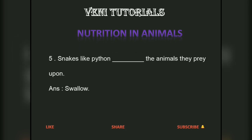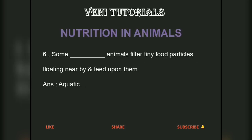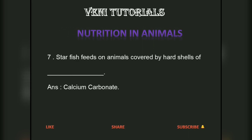Snakes like pythons swallow the animals they prey upon. Some aquatic animals filter tiny food particles floating nearby and feed upon them. Starfish feeds on animals covered by hard shells of calcium carbonate.